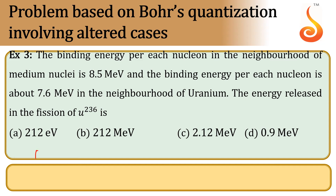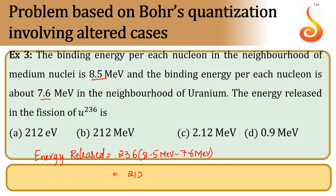Energy released is equal to the number of nucleons, which is 236, multiplied by the difference in binding energy per nucleon. The initial binding energy per nucleon was 8.5 mega electron volt and the final is 7.6 mega electron volt. So, 236 into (8.5 MeV minus 7.6 MeV). By simplifying, we get 212.4 mega electron volt.